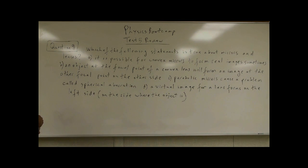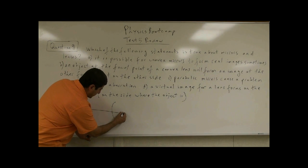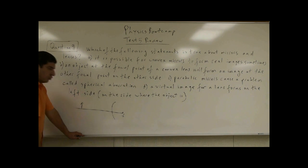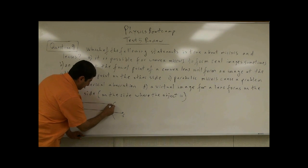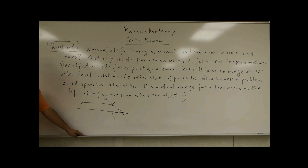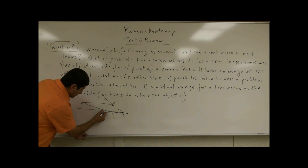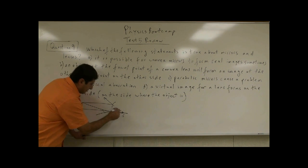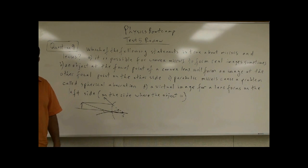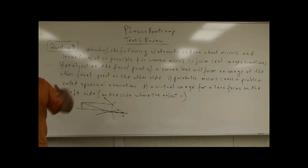So, which of the following statements is false? It is possible for convex mirrors to form real images. A convex mirror — we said the focal point of a convex mirror is on the other side. No matter where the object is, a straight beam of light bends this way; it feels like it's coming from the focal point. A beam of light headed to the center of the mirror bounces back. These two angles are equal, and the object forms a small diminished virtual image on the other side of the mirror.